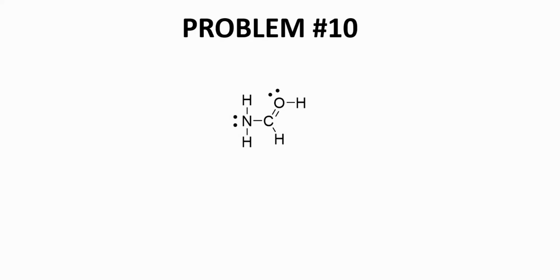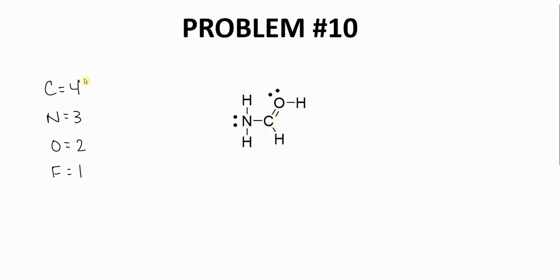At last, here is our final problem. Let's write down our expected number of bonds for the second row elements we most commonly encounter. The nitrogen on the left has 3 bonds and a full octet — exactly what we expect — so this nitrogen is a neutral atom. This carbon has a full octet with 4 bonds — that's what we expect — so no formal charge. Here is an oxygen with 3 bonds and a lone pair — that's a full octet of 8 electrons — but this oxygen has 3 bonds, not 2. Therefore this oxygen has too many bonds and has a positive charge.